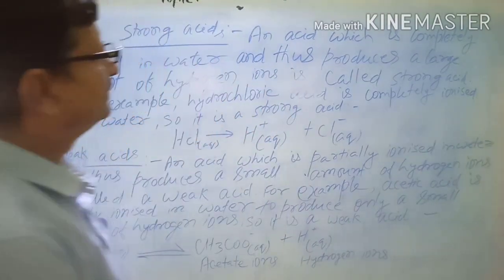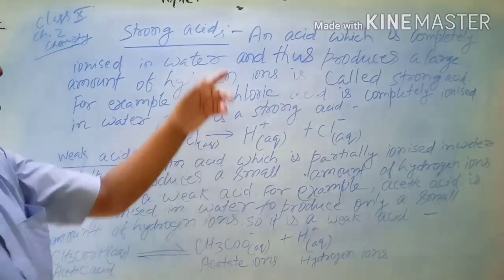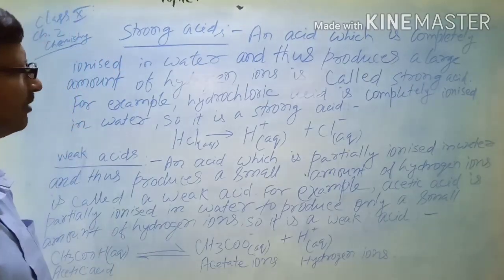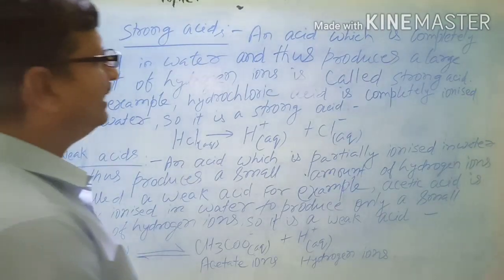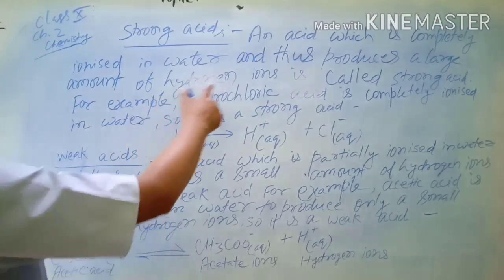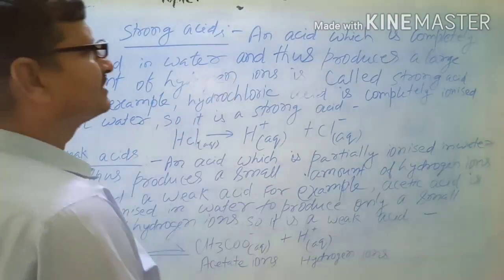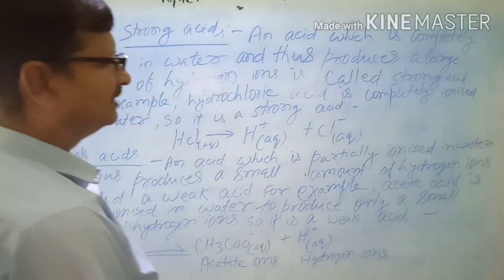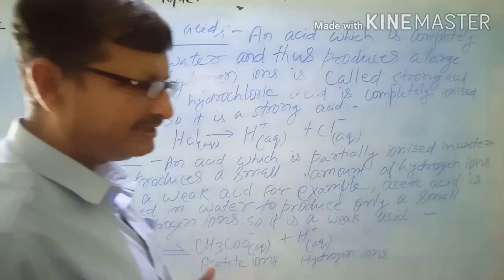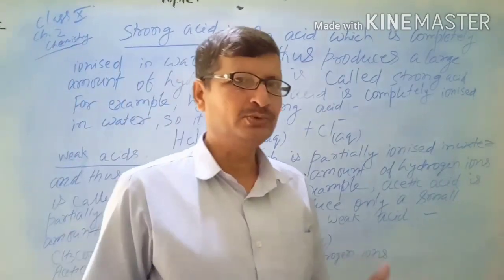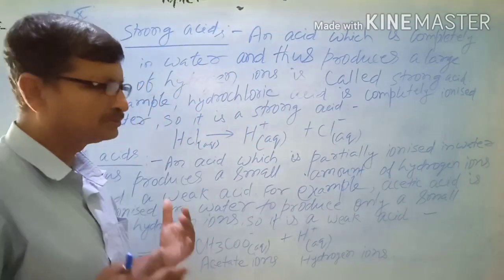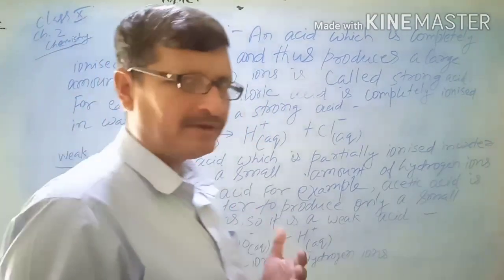An acid which completely ionizes in water and thus produces a large amount of hydrogen ions is called a strong acid. When the acid completely ionizes, then we will say it is a strong acid.